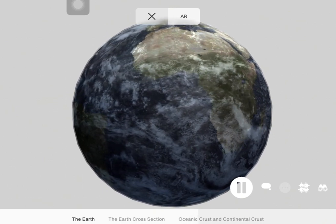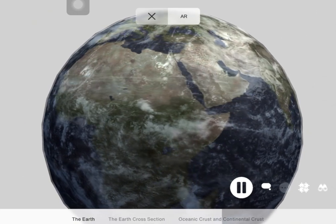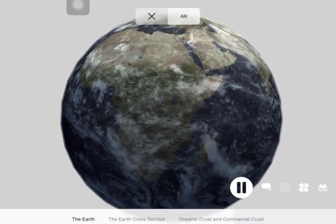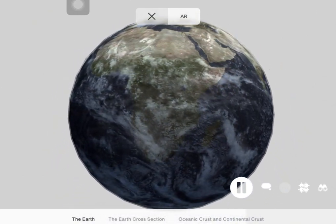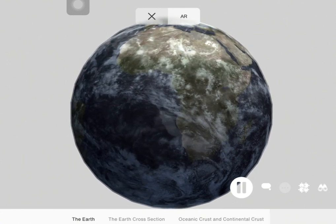But larger than the other three rocky planets: Mercury, Mars, and of course, Venus. Now the Earth has a diameter of roughly 8,000 miles or 13,000 kilometers, and is round because gravity pulls matter into a ball.